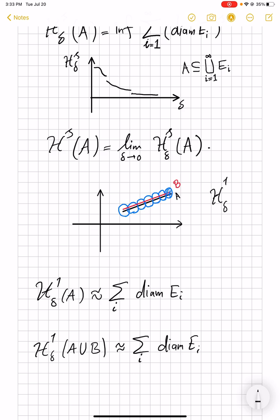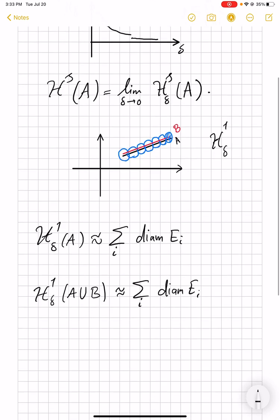the same covering also approximates the H^1_δ of the union. If H^1_δ was going to be a measure-like object, we would expect this to be H^1_δ of A plus H^1_δ of B. But in this case, we see that H^1_δ of A union B is just equal to H^1_δ of A,